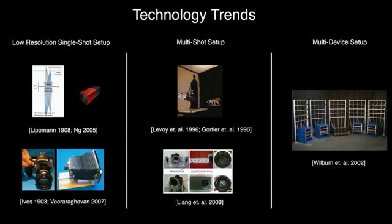Current technology trends include single-shot approaches that multiplex a low-resolution light field into a sensor image, for instance using lenslet arrays or coded masks. Alternatively, high-resolution light fields can be acquired in multiple images using camera gantries or coded apertures. Unfortunately, such approaches make it difficult to capture dynamic scenes. Camera arrays can be employed to overcome this limit but are expensive and usually bulky.